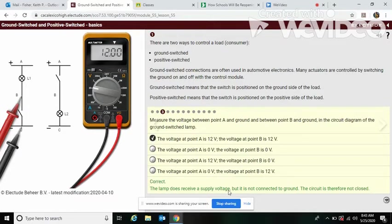The lamp does receive supply voltage, but is not connected to ground. So the circuit is therefore not closed.